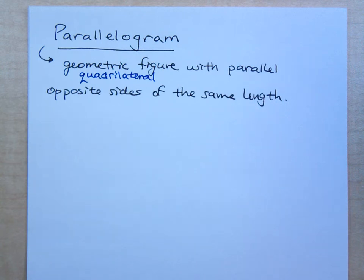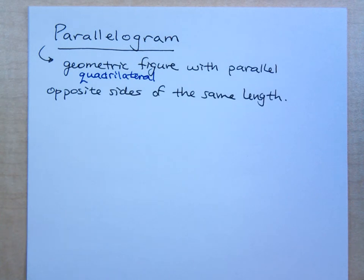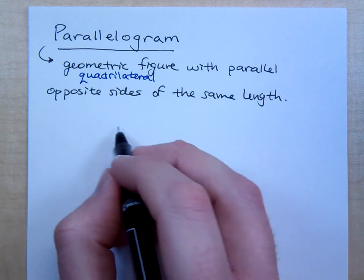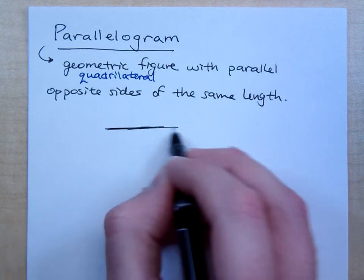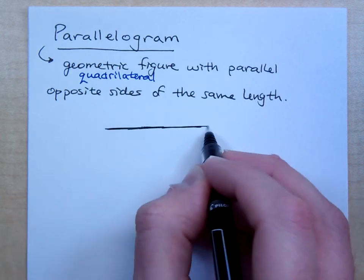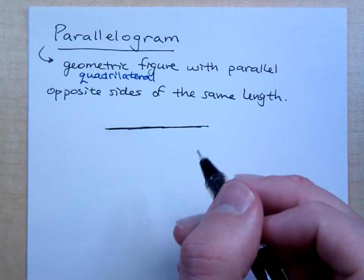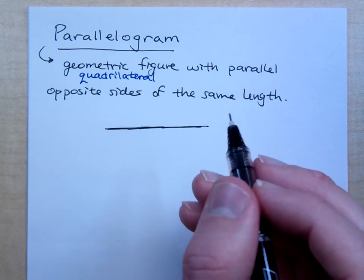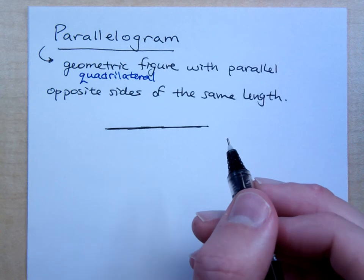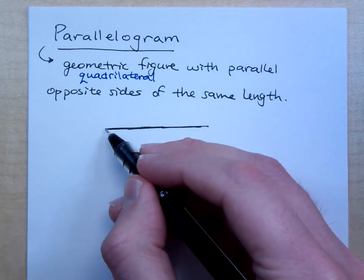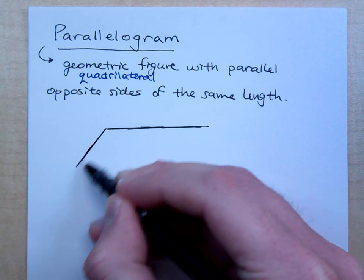When I say quadrilateral, that means something with four sides. Opposite sides have the same length, and they are also parallel. What does parallel mean? They don't overlap, they won't ever intersect — they run next to each other, they run side by side.